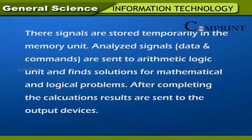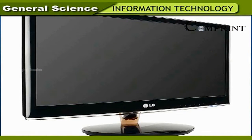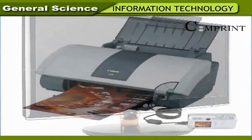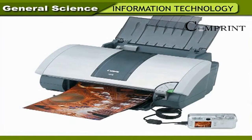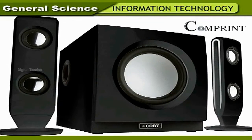Analyzed signals, data and commands are sent to the arithmetic logic unit to find solutions for mathematical and logical problems. After completing the calculations, results are sent to the output devices. Output devices: 1. Monitor — looks like a television screen; one can see data, graphs, pictures, etc. on the screen. 2. Printer — a device that transfers data from the computer to paper in print form. 3. Speaker — the device through which sound is emitted.